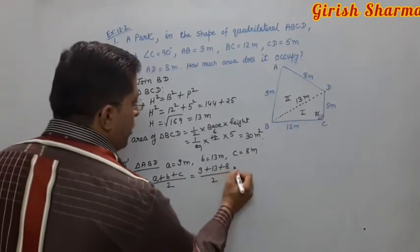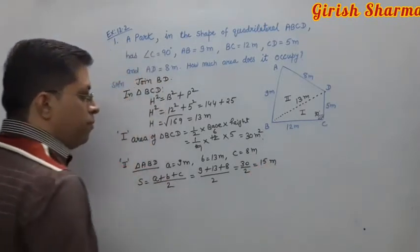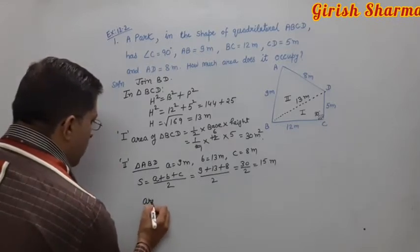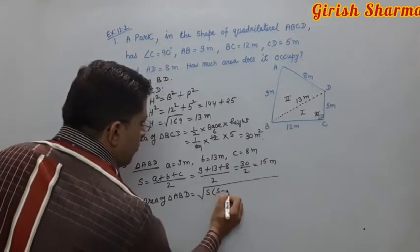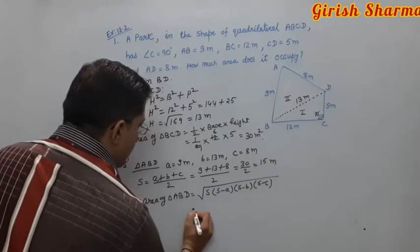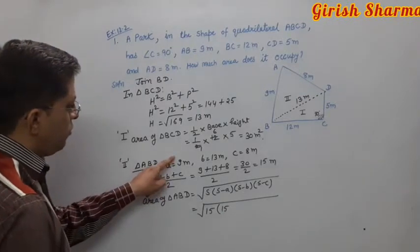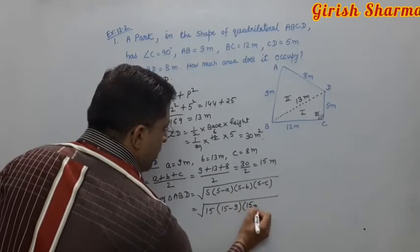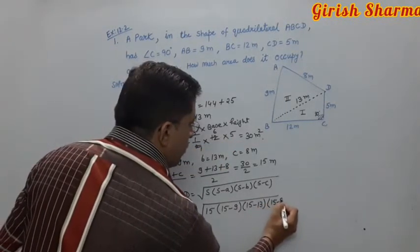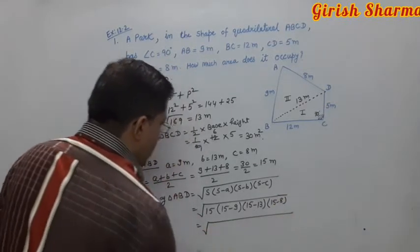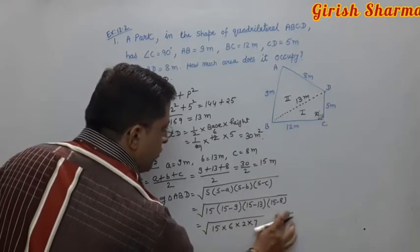Now apply Heron's formula for triangle ABD: area equals under root of s(s minus a)(s minus b)(s minus c). With s equals 15: s minus 9 equals 6, s minus 13 equals 2, and s minus 8 equals 7. So area equals under root of 15 times 6 times 2 times 7.